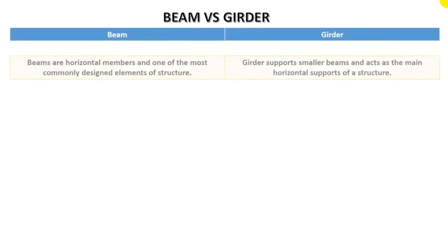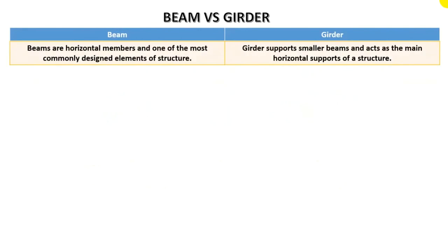First of all, a beam is a horizontal member and one of the most commonly designed elements of the structure. A girder supports smaller beams and acts as the main horizontal support of the structure.